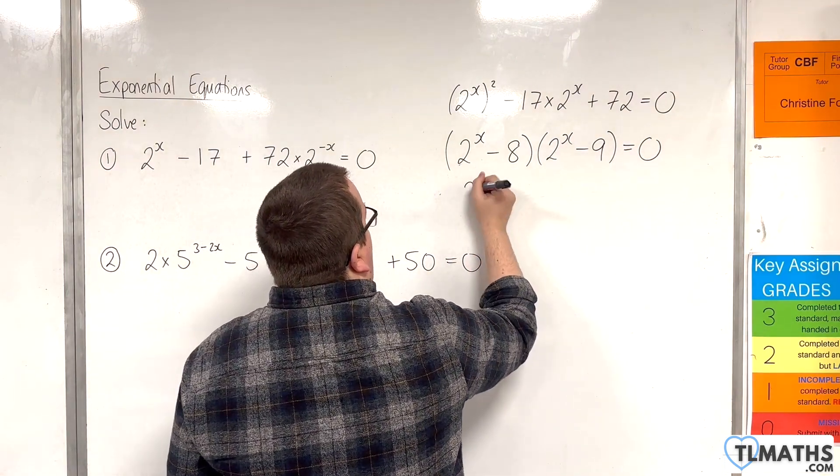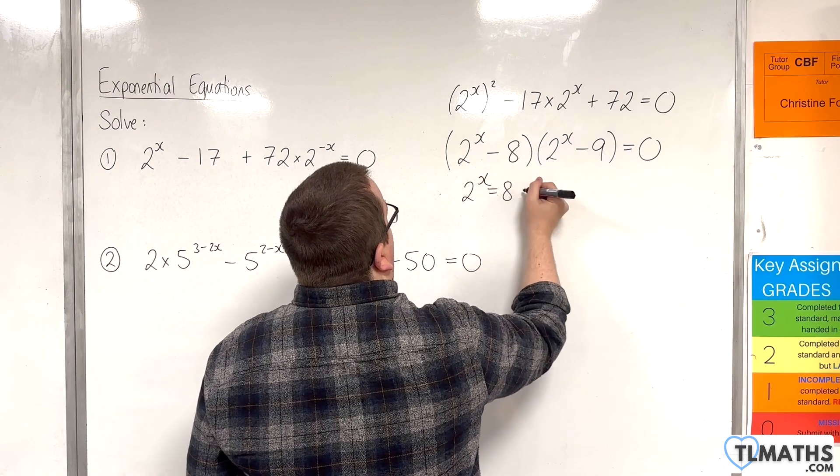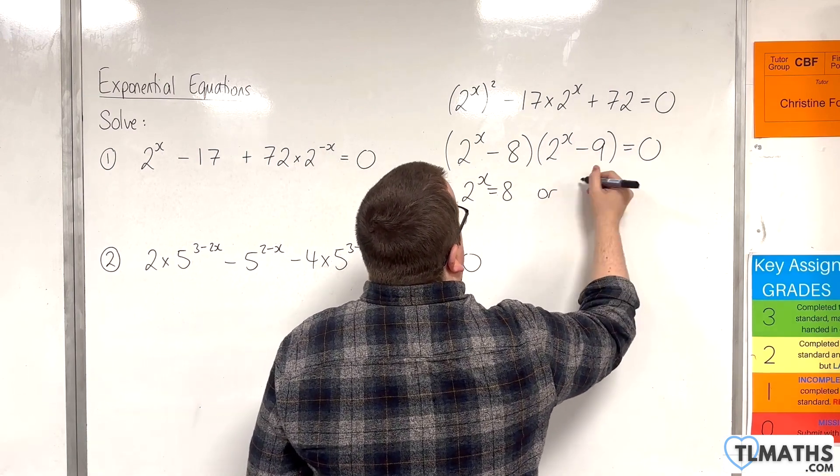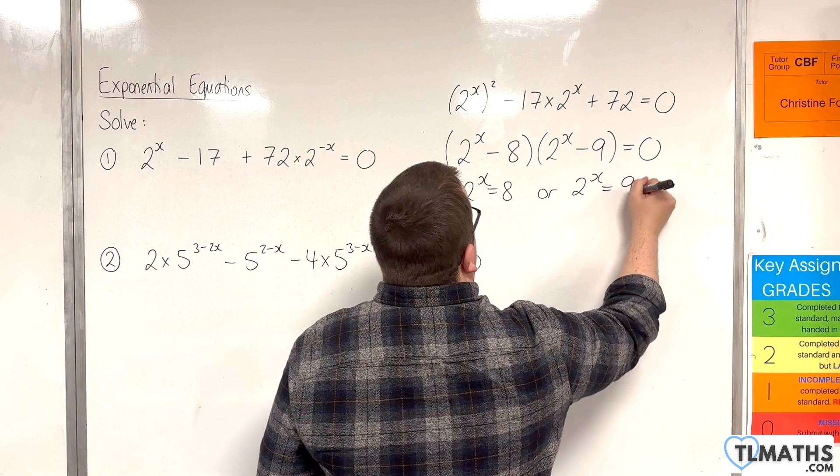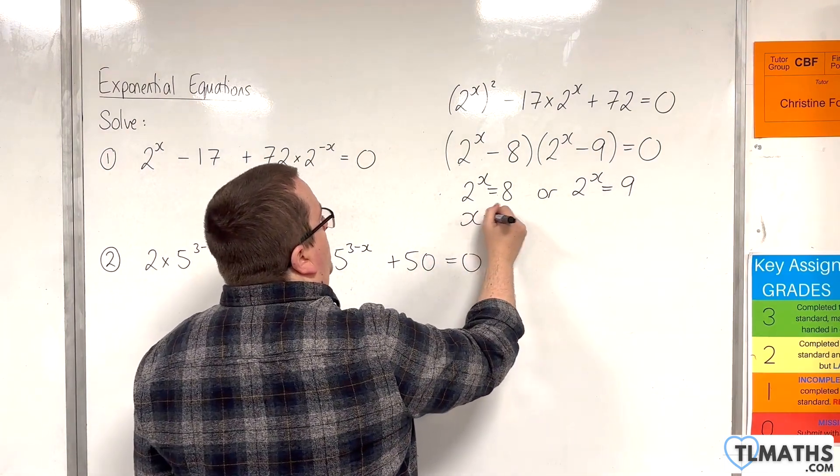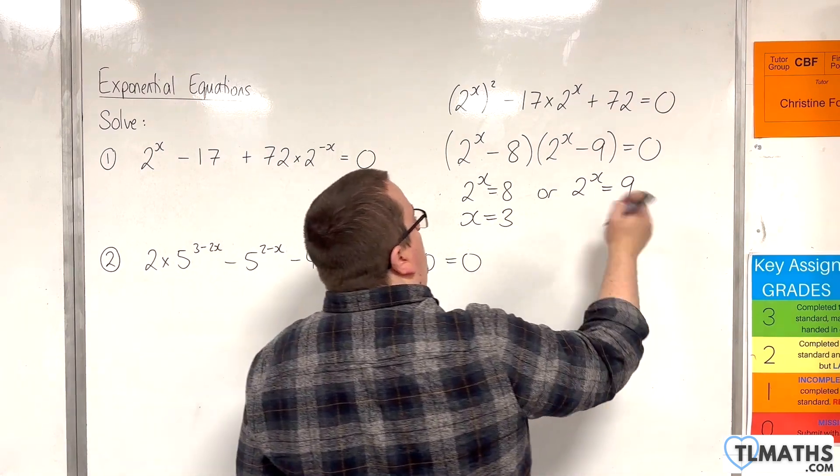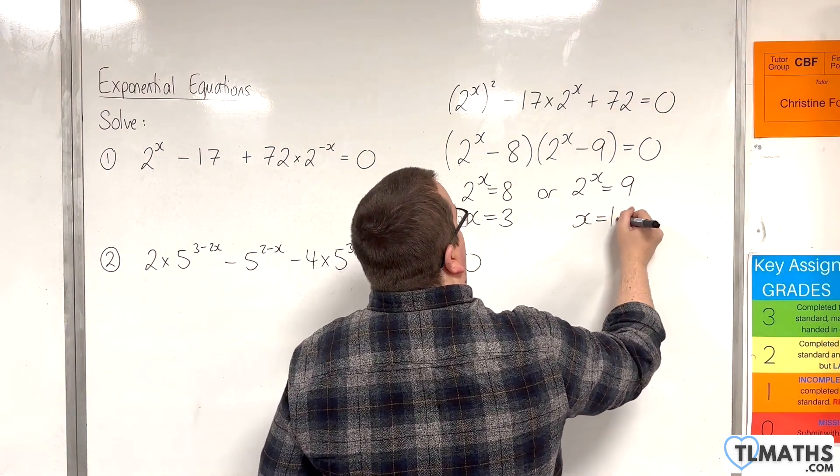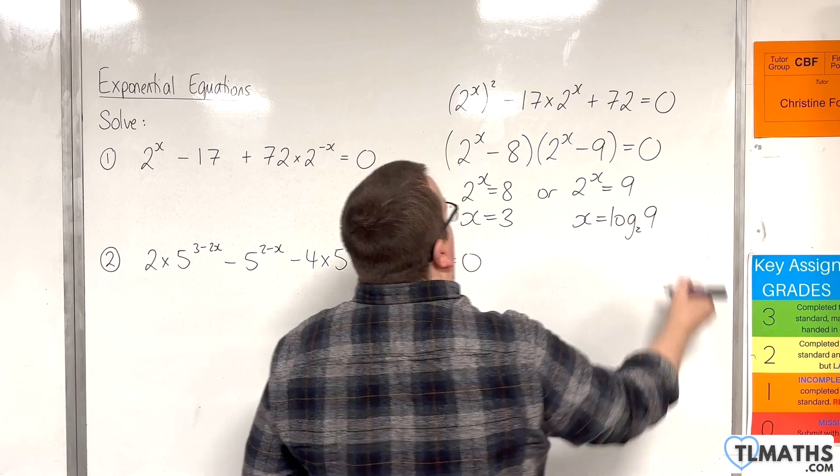So, either that bracket is 0, in which case 2^x is 8, or this bracket is 0, so 2^x would be equal to 9. So, 2^x equals 8, that means that x would be equal to 3. And if 2^x is equal to 9, then x is log base 2 of 9.